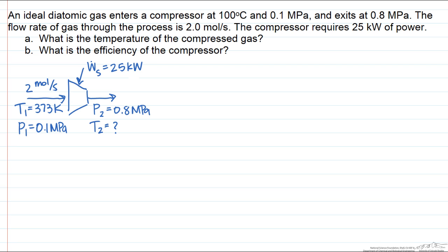And so what we want to do to determine the outlet temperature is to do an energy balance around the system. The energy balance for a compressor says that the shaft work is equal to the change in enthalpy of the fluid. And so we can multiply the molar flow rate by the enthalpy change per mole of fluid.